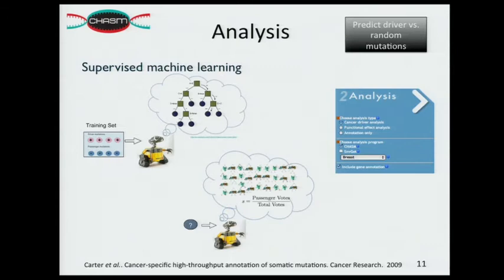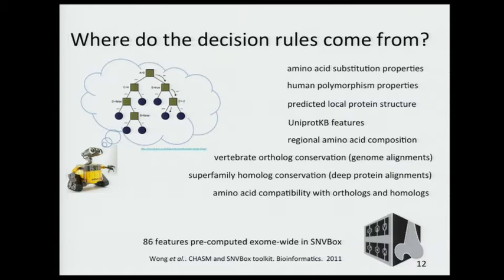Next is analysis. We have two main analysis tools. The first is CHASM, a supervised machine learning method that attempts to discriminate between driver mutations and passenger mutations. It uses an algorithm called a random forest — an ensemble of decision trees — and the trees vote as to whether a particular mutation is a driver or a passenger. You get a score which is the fraction of trees that voted for the passenger class. We have pre-computed 86 bioinformatics-based features for almost every position in the exome, so we can do this analysis very fast, which is our goal since we expect to handle submissions of millions of mutations.